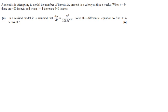Moving to the next question. In this question, part one asked you to show the differential equation — since that's not on the course this year, it's been left out. We just need to find n in terms of t. A scientist models the number of insects n in a colony at time t weeks. When t = 0 there are 400 insects and when t = 1 there are 420 insects.